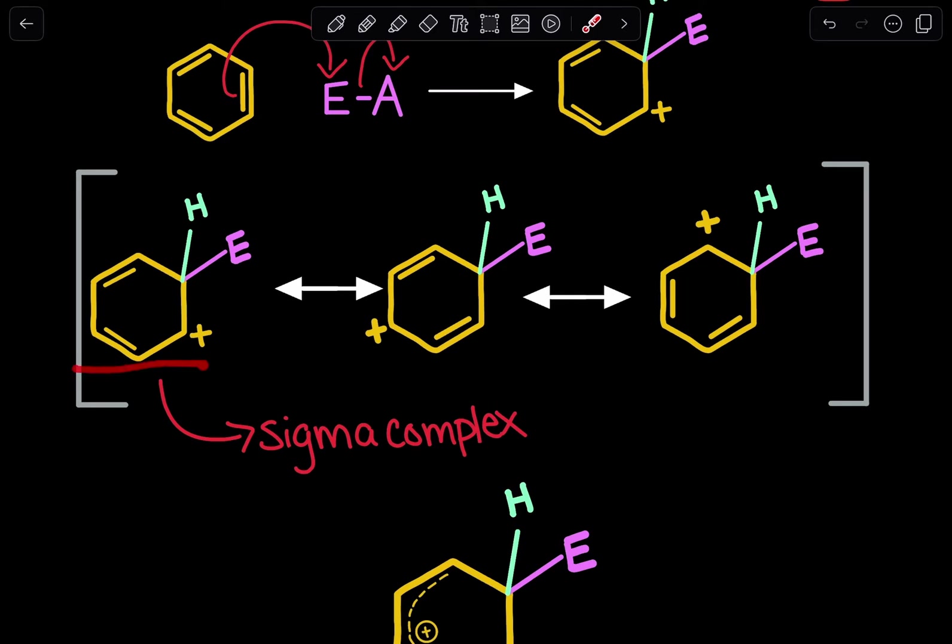This is our initial product and we have these pi bonds. What happens is we can actually move electrons towards a positive charge. Over here, this carbon has a positive charge. So we can move these electrons over here and as a result, we will get that conjugated pi bond over here.